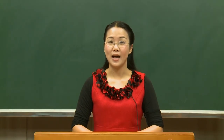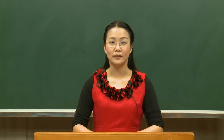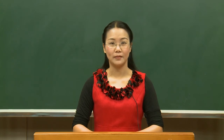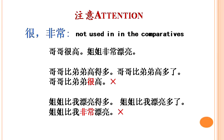Attention please! The words 很 and 非常 are commonly found in declarative sentences. For instance: 哥哥很高; 姐姐非常漂亮. But these words cannot be used in comparatives. You should say 哥哥比弟弟高得多 or 哥哥比弟弟高多了, rather than 哥哥比弟弟很高. So 姐姐比我漂亮得多 or 姐姐比我漂亮多了 is used. When you want to express the meaning of 很 or 非常 in comparatives, use 得多 or 多了 instead.